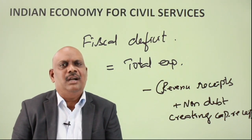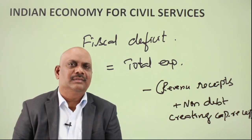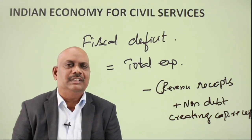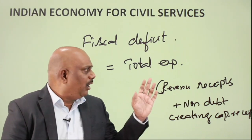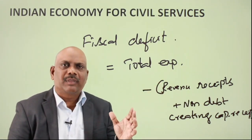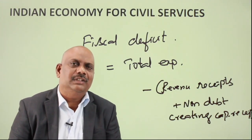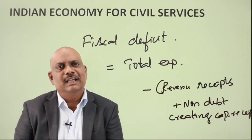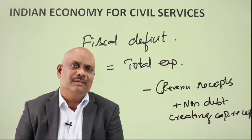Capital expenditure, on the other hand, includes investment and creation of assets. So how does fiscal deficit vary over time, what steps have we taken to contain it, and why do many say fiscal deficit is a necessary evil? Why should it be there?